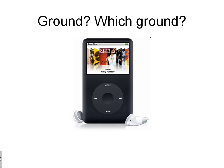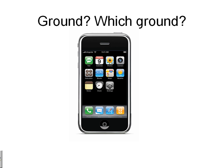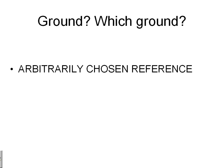However, in cases like an iPod or an iPhone, the device is not connected to the planet, so it doesn't make sense to talk about earth ground. In that case, we choose arbitrarily any point in the circuit of the device as the reference one. It is customary to call that reference point — whatever that is — still 'ground' sometimes, even though it's not really connected to the planet. But it is arbitrarily chosen, and we stick to it. Once we choose it, we don't change it for the rest of the solution of the circuit.